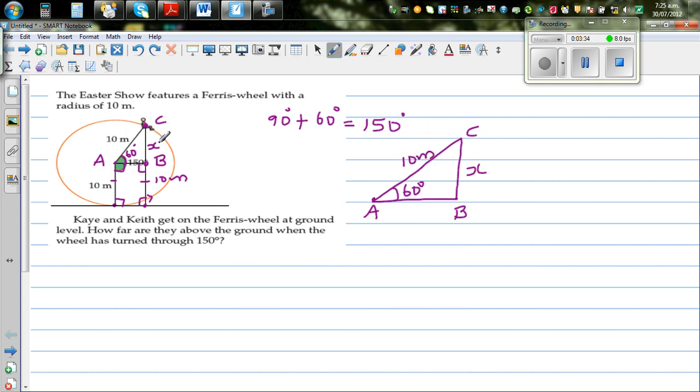So if you know 10, if you find X, 10 plus X would be the height of Kay or Keith when they have traveled 150 degrees. So let's find X. So now this is an example of SOH-CAH-TOA.